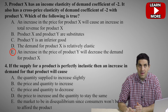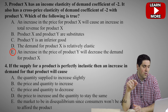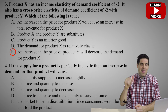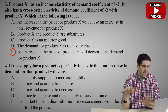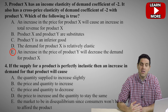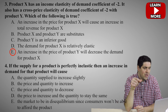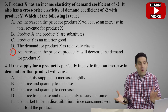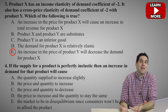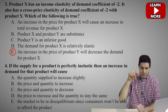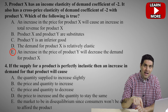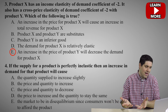Let's go over the wrong answers. For A — an increase in the price of X will cause an increase in total revenue for product X — we don't know that; we have no information about the elasticity of demand for this product. B says product X and Y are substitutes — no, they're complements. C says product Y is an inferior good — we don't know that; the information given only says X has a negative income elasticity. D says demand for product X is relatively elastic — again, no information about that. So the right answer is E.